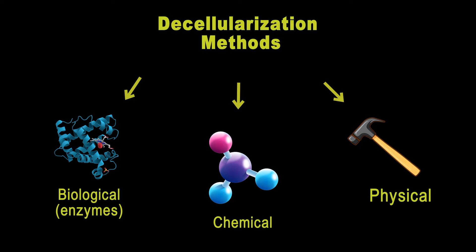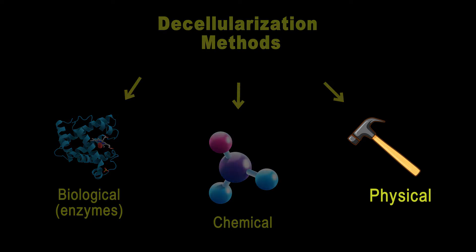But each of these methods have its own strengths and weaknesses. Physical methods can be harsh and might damage the ECM, while chemical methods can leave behind unwanted contaminants. Enzymes are more specific and can be gentler, but they can also be expensive and time consuming.